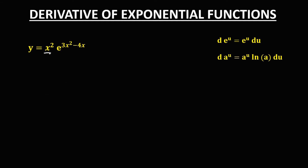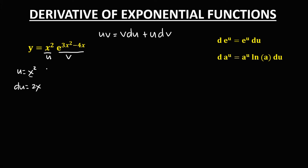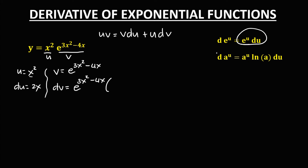Then for this given, using the product rule: u times v equals v times the derivative of u plus u times the derivative of v. So u is equal to x squared, and the derivative of x squared is 2x. Then for v, that's e to the power 3x squared minus 4x. For the derivative of v, using the exponential formula, we have e to the power 3x squared minus 4x times the derivative of the exponent. The derivative of 3x squared is 6x, and the derivative of negative 4x is negative 4.